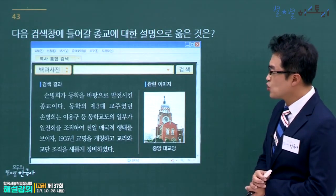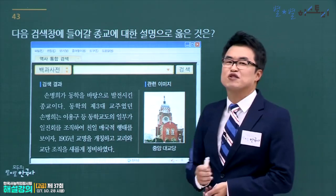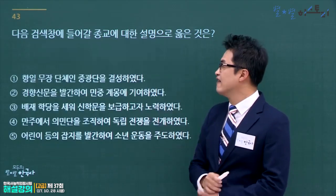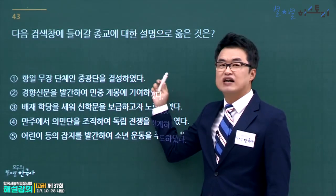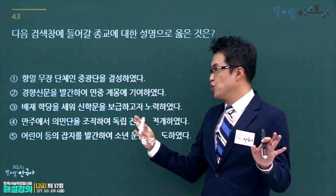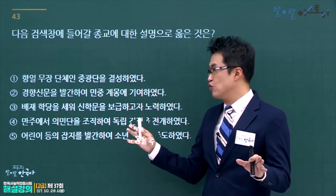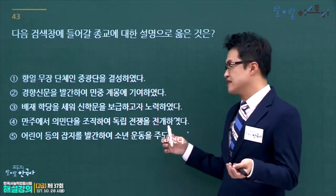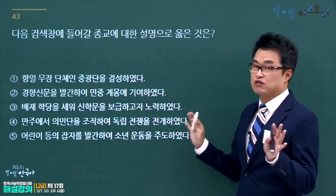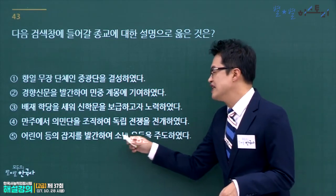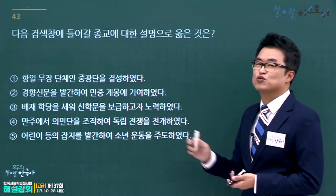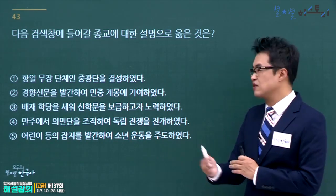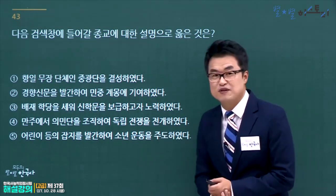손병희와 동학이 연결되는 종교는 천도교입니다. 천도교에 대한 설명을 고릅니다. 항일무장단체 중광단은 대종교, 경향신문 발간은 천주교, 배재학당은 기독교(개신교), 만주 의민단은 천주교입니다. 어린이 잡지 발행과 소년운동을 주도한 소파 방정환이 천도교와 연결되므로 정답은 5번입니다.